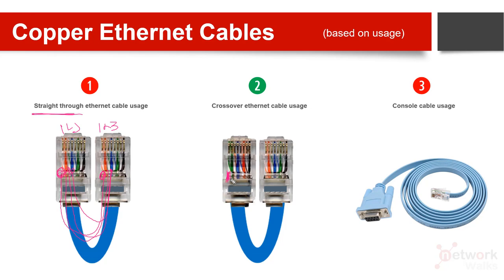In a crossover cable, the pins are swapped. For example, cable number one on the left side — which is half-green — goes to pin number three on the right side, not pin one. The second cable, which is green on the left, becomes orange on the right. So pin one on the left maps to pin three on the right, and pin two on the left maps to pin six on the right.